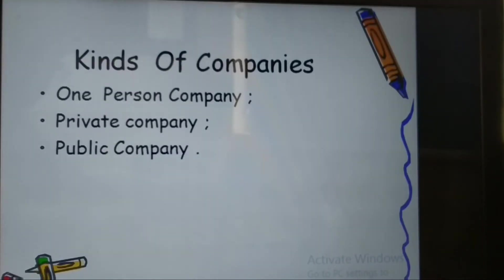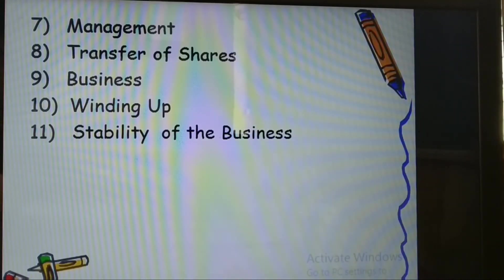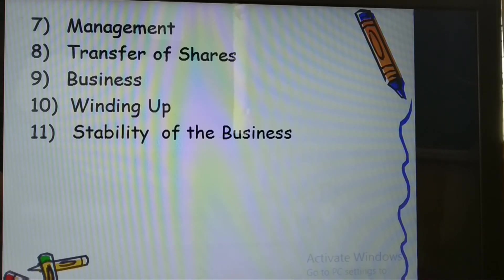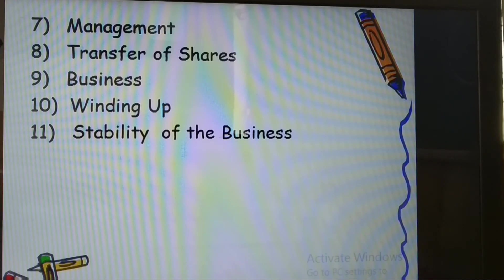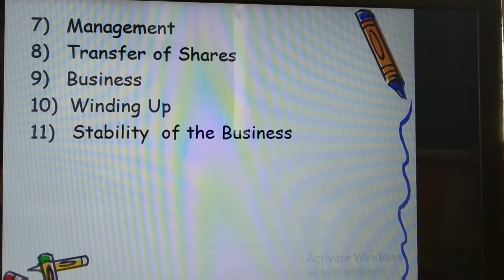Regarding management: in partnership, the business is managed by all its partners. In a company, because the number of members can be very large in a public company, all shareholders cannot manage together. Therefore, in a company, business is managed by directors who are elected by shareholders. In board meetings, shareholders exercise their voting rights to elect the directors they want.